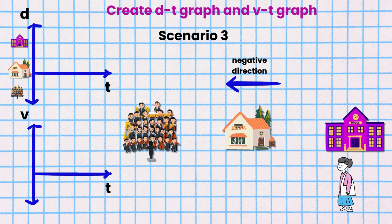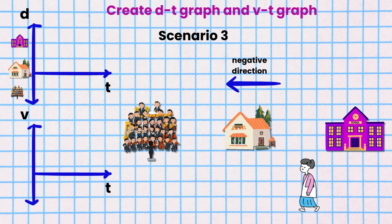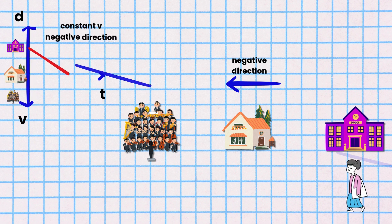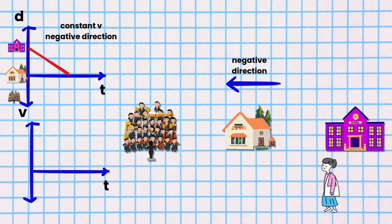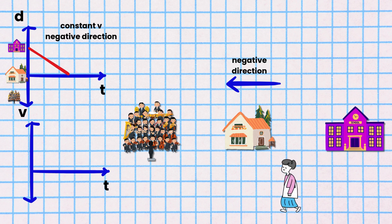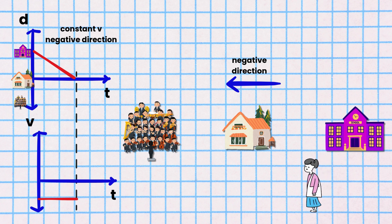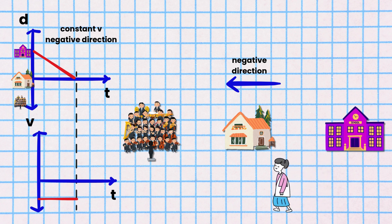Scenario 3. Ion is walking from school to her home at a constant velocity. The DT graph is a straight line with a negative slope since she is walking in the negative direction. The VT graph would be a horizontal line at the appropriate velocity value in the negative quadrant below the time axis.